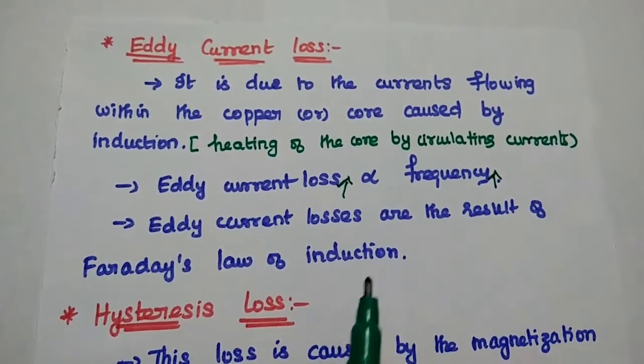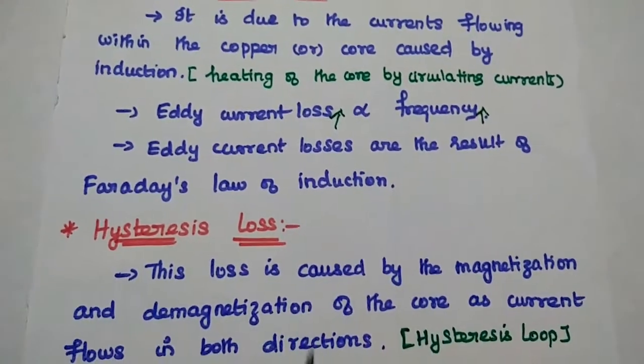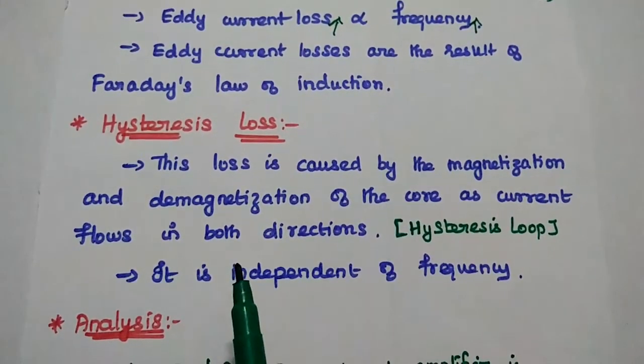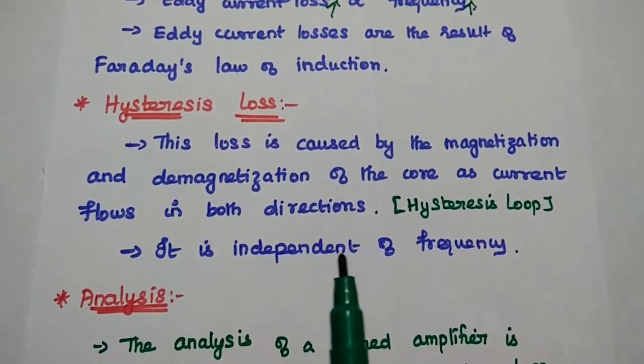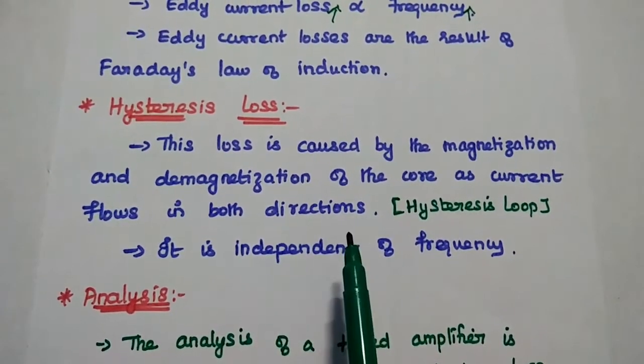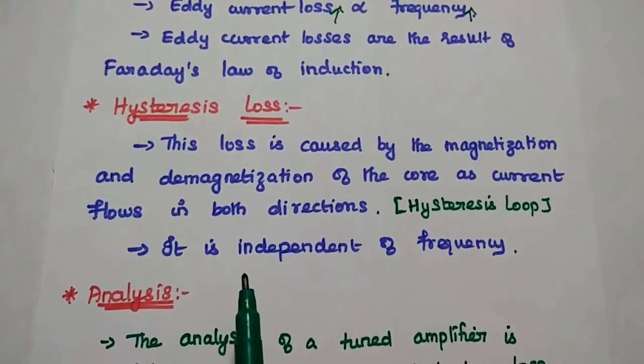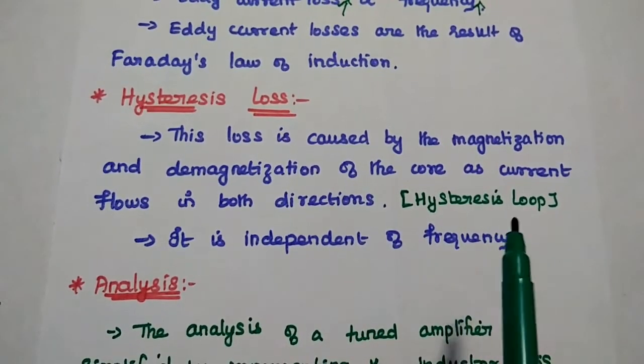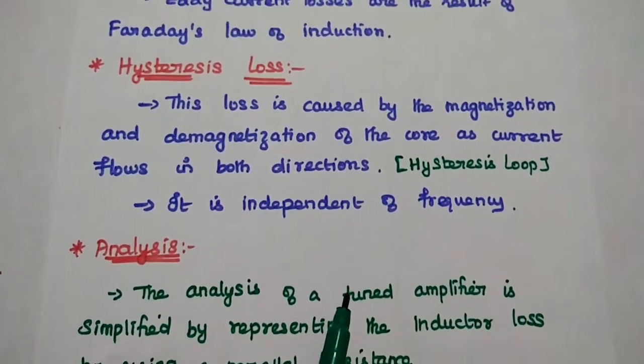This eddy current loss is the result of Faraday's law of induction. So the next one is hysteresis loss. This loss is caused by the magnetization and demagnetization of the core as the current flows in both the directions, like forward direction and reverse direction. In case of forward direction, it is getting magnetized. In case of reverse direction, it is demagnetized. That is called as hysteresis loop. So the loss associated with this loop is known as hysteresis loss. It is independent of frequency.